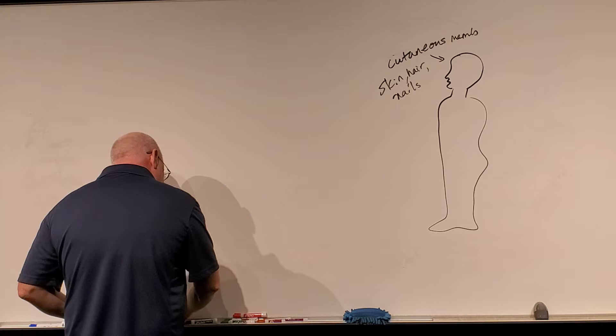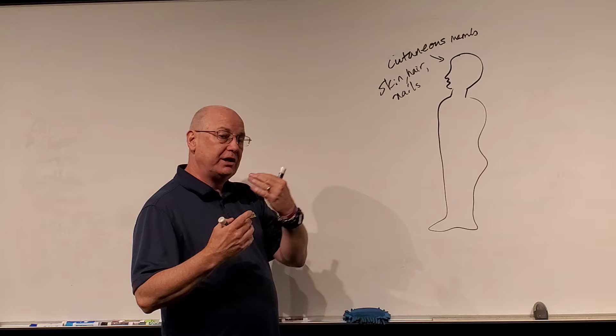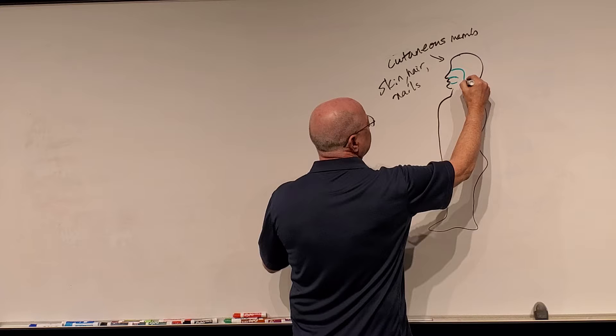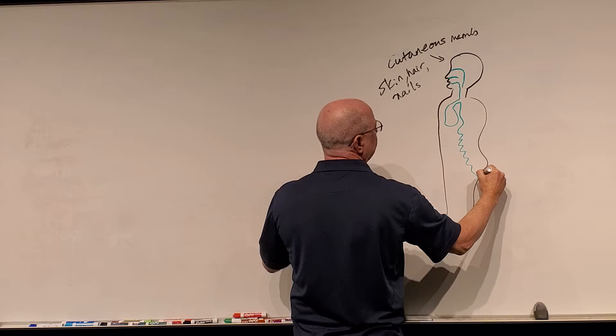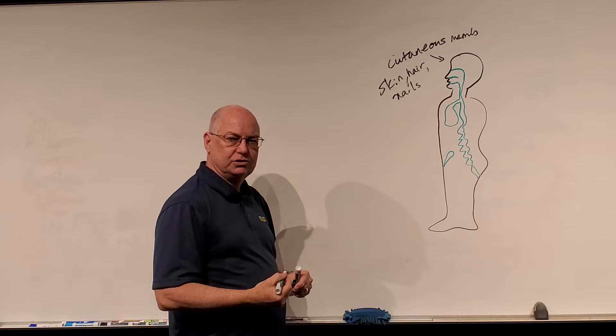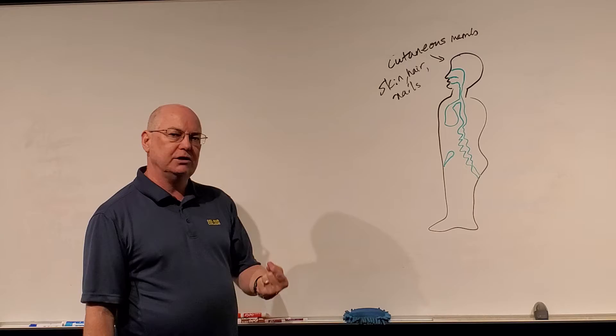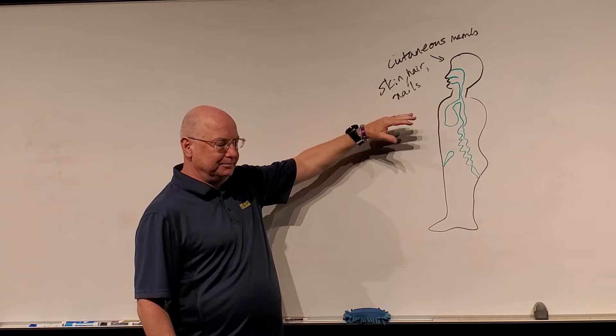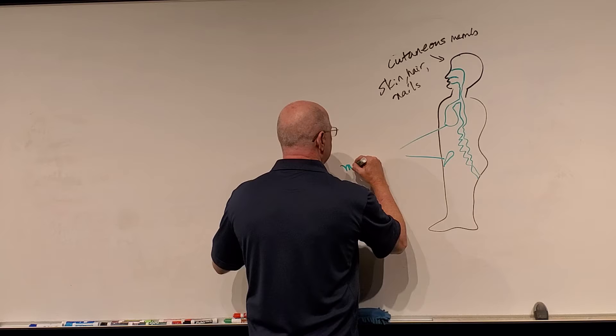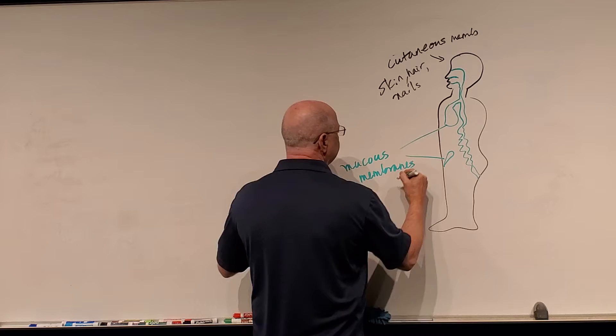We have some internal passageways and compartments that are open to the outside world. For example, the respiratory tract and the oral cavity go down to your lungs and through the digestive tract. And then we have the reproductive and urinary tracts. Those openings — those are internal compartments or passageways open to the outside world. They would be moist with a mucous covering, so we call those the mucous membranes.